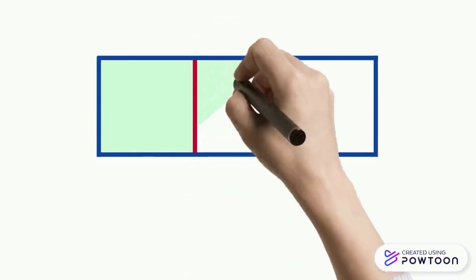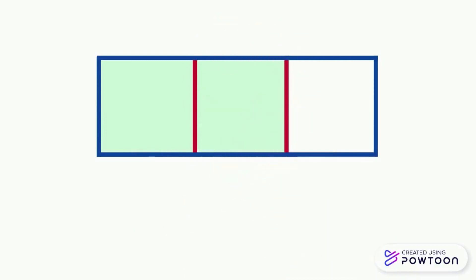If we colored two parts of this rectangle, the fraction will be 2 over 3, which is two thirds. The number 2 represents the number of colored parts.